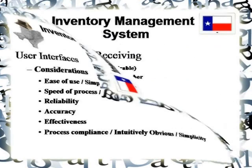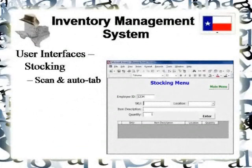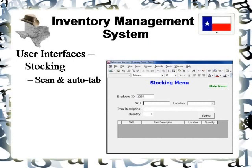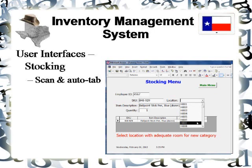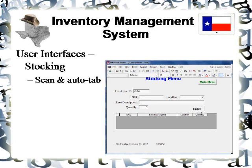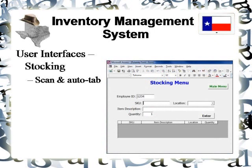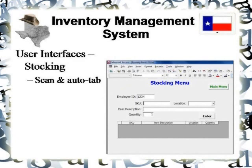Here we have an example of a fairly simple user interface — the stocking menu. Basically all you have is the employee ID, the SKU which is also the UPC, and the location. The description is automatically pulled up by the system, and the quantity is pre-filled as 1, which can be edited. The user scans the UPC or barcode on the product, the system searches and pulls up the description, then provides a location recommendation. The user scans the location and hits Enter. If using a barcode scanner, this is all fairly automatic with AutoTab. Very quick, very effective, and to the point.